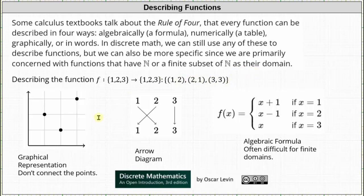We can express the same function as three points on the coordinate plane, where we have the points (1, 2), (2, 1), and (3, 3). However, it is important to not connect the points. Next we have an arrow diagram that shows one maps to two, two maps to one, and three maps to three.